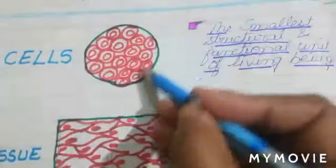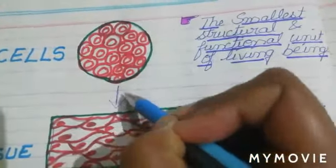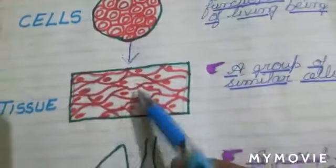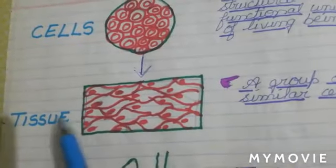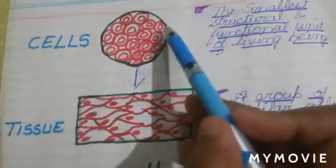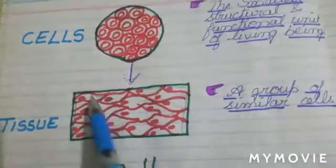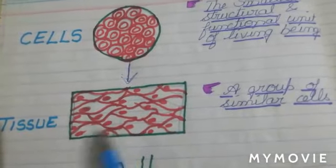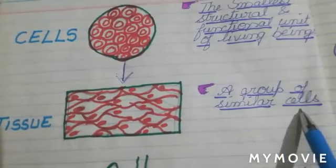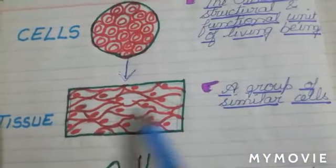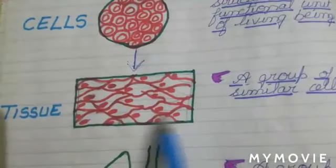These cells — cells of similar types — join together to form a tissue. A group of similar cells, when they join together, forms a tissue.